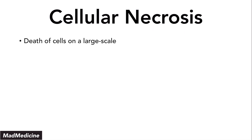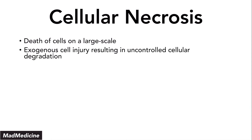Cellular necrosis is when cells die off on a large scale. Usually this occurs extracellularly, meaning you have an exogenous cell injury resulting in uncontrolled cellular death.